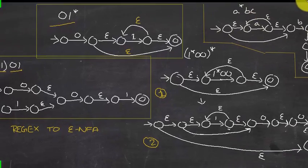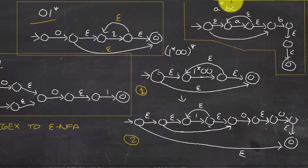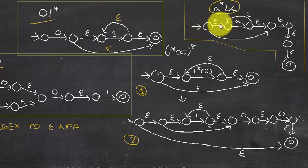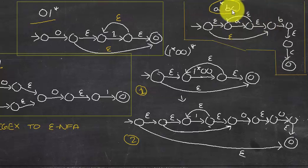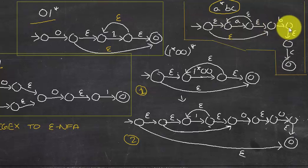Next example: a*bc. For the Kleene closure a*, we have epsilon at the beginning, epsilon at the end, epsilon going back, and an epsilon going directly to the next stage. Then B and C follow as simple concatenation — B is not an accepting state since B and C are compulsory — so we go: B, epsilon, C.